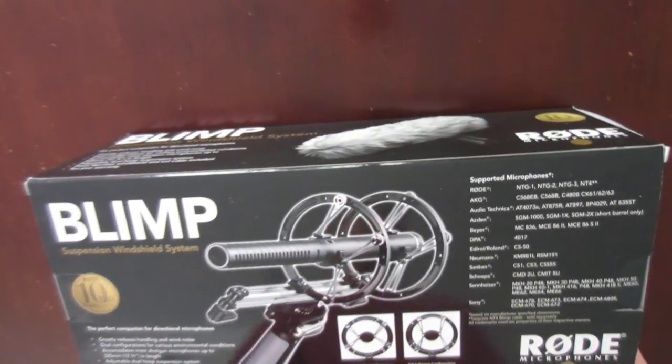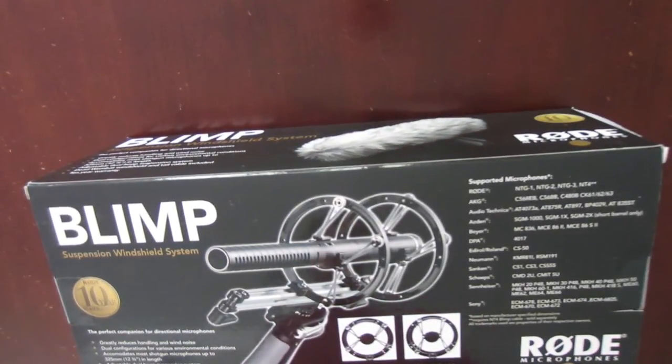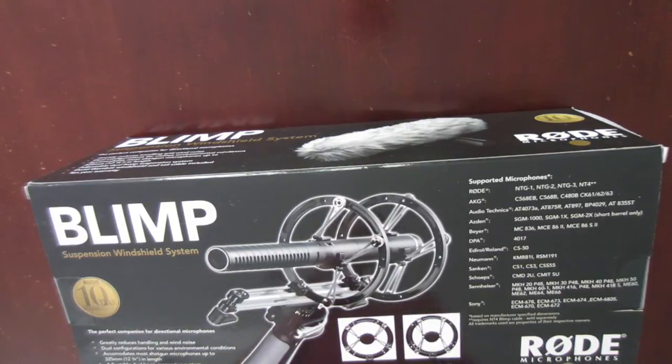The back shows the inside of the blimp and all its features. It greatly reduces handling and wind noise, has dual configurations for various environmental conditions, and accommodates most shotgun microphones up to 325mm or 12 and 3/4 inches in length.